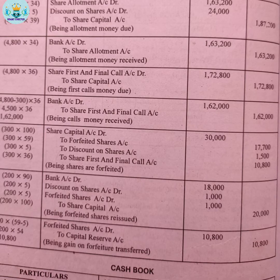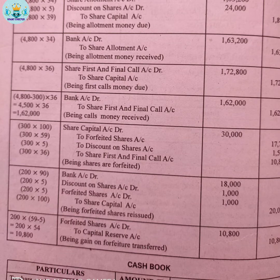Bank account is debited to share allotment account: 4800 × 34 = Rs.1,63,200. For the first and final call entry: share first and final call account is debited to share capital account. The call amount is 4800 × 36 = Rs.1,72,800.